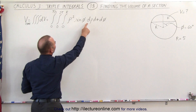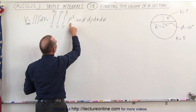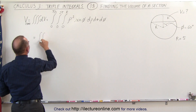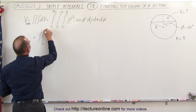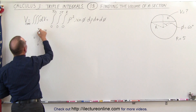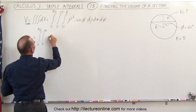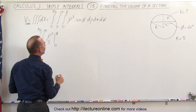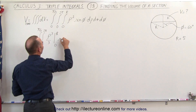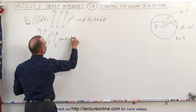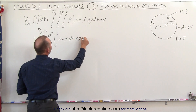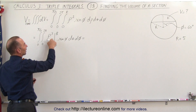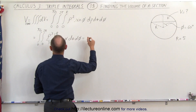First, let's integrate rho squared d-rho. That becomes rho cubed over 3. So this is equal to the integral from 0 to 2 pi and from 0 to pi over 3 of rho cubed over 3, evaluated from 0 to the edge of the sphere, times sine of phi d-theta d-phi. When we plug in the upper limit we get r cubed over 3, and plugging in the lower limit gives 0.